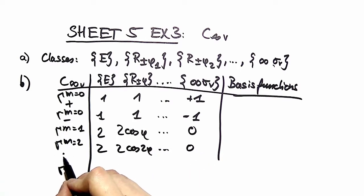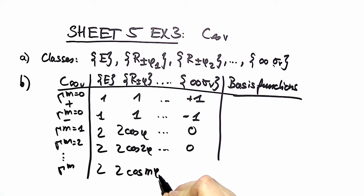In general, the general gamma mth irreducible representation, the character of r plus minus phi, looks like 2 times cosine m phi, and again is zero for the reflections.